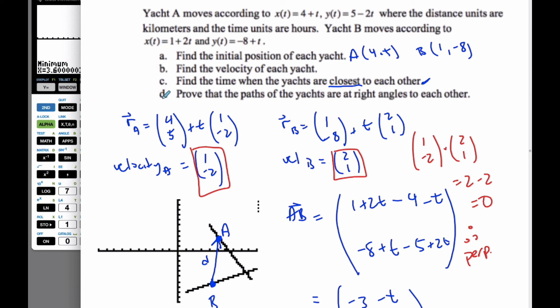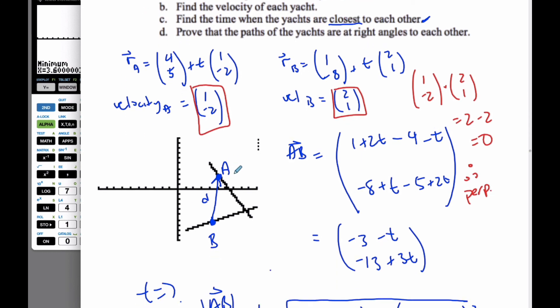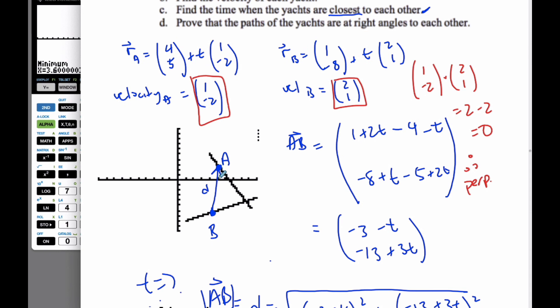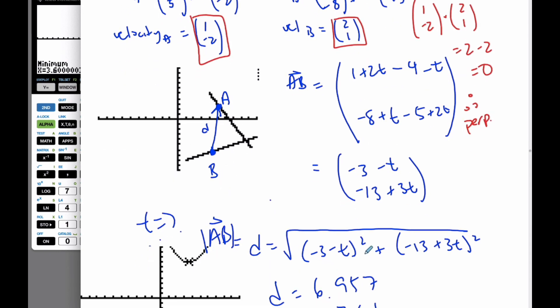So, the A, B, and D are not so bad, but C part is quite challenging, setting up this general vector AB, representing the distance between the boats, and then finding when it is a minimum.